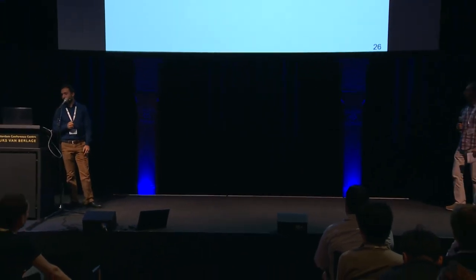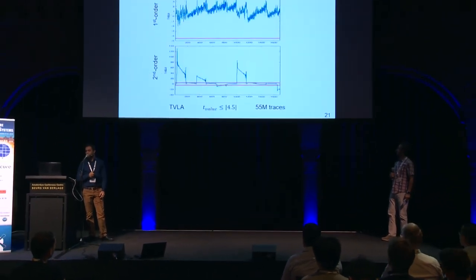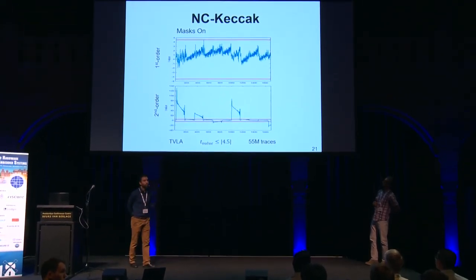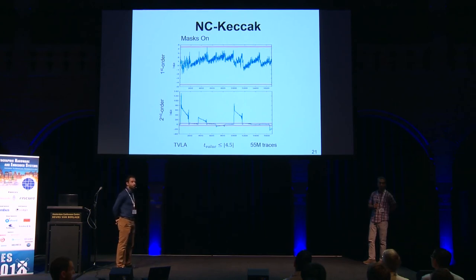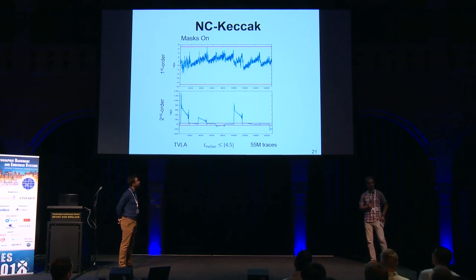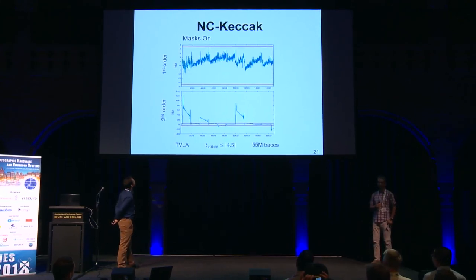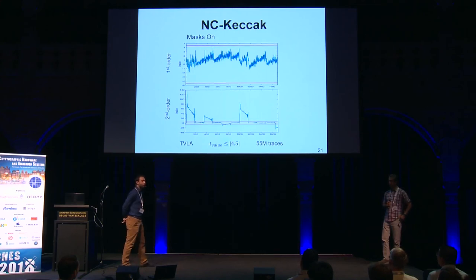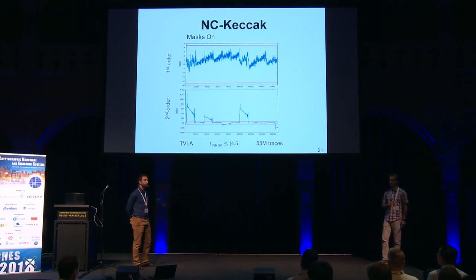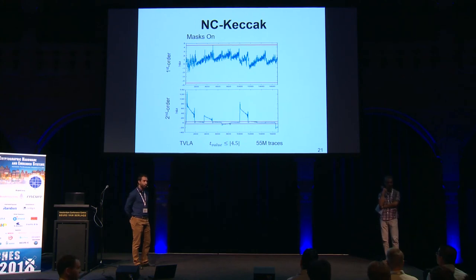Question from the audience: On the TVLA graph showing first-order results, there appears to be a peak reaching the threshold — why do you say there is no leakage? Viktor responds: The value reaches about 4.5, but it is a spike that went up and then came back down. Due to the statistical nature of the test, we don't consider it a leakage since it did not remain above the threshold consistently. The questioner confirms: So you tested this point and verified it is not a leakage. Viktor confirms: Yes.